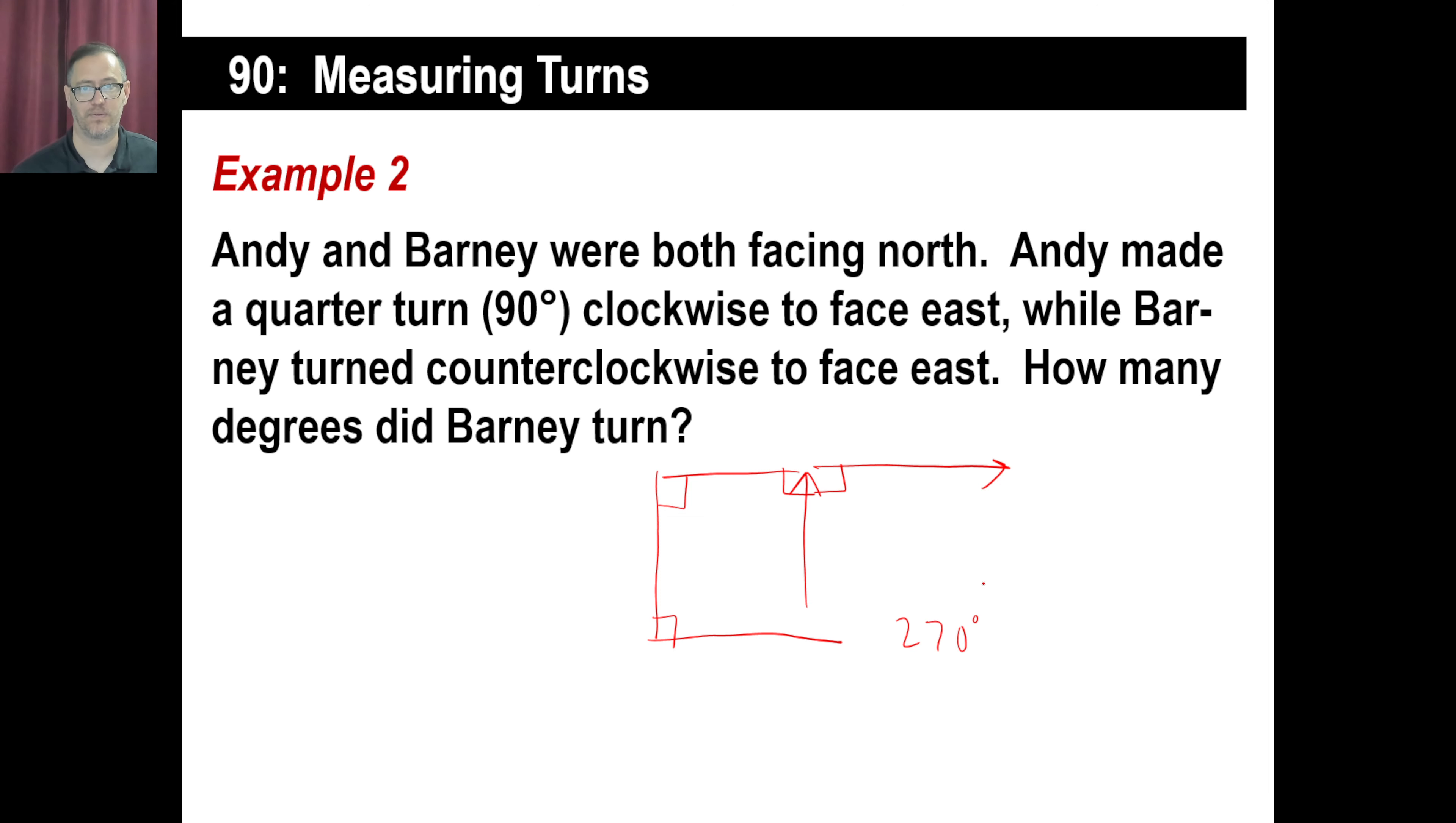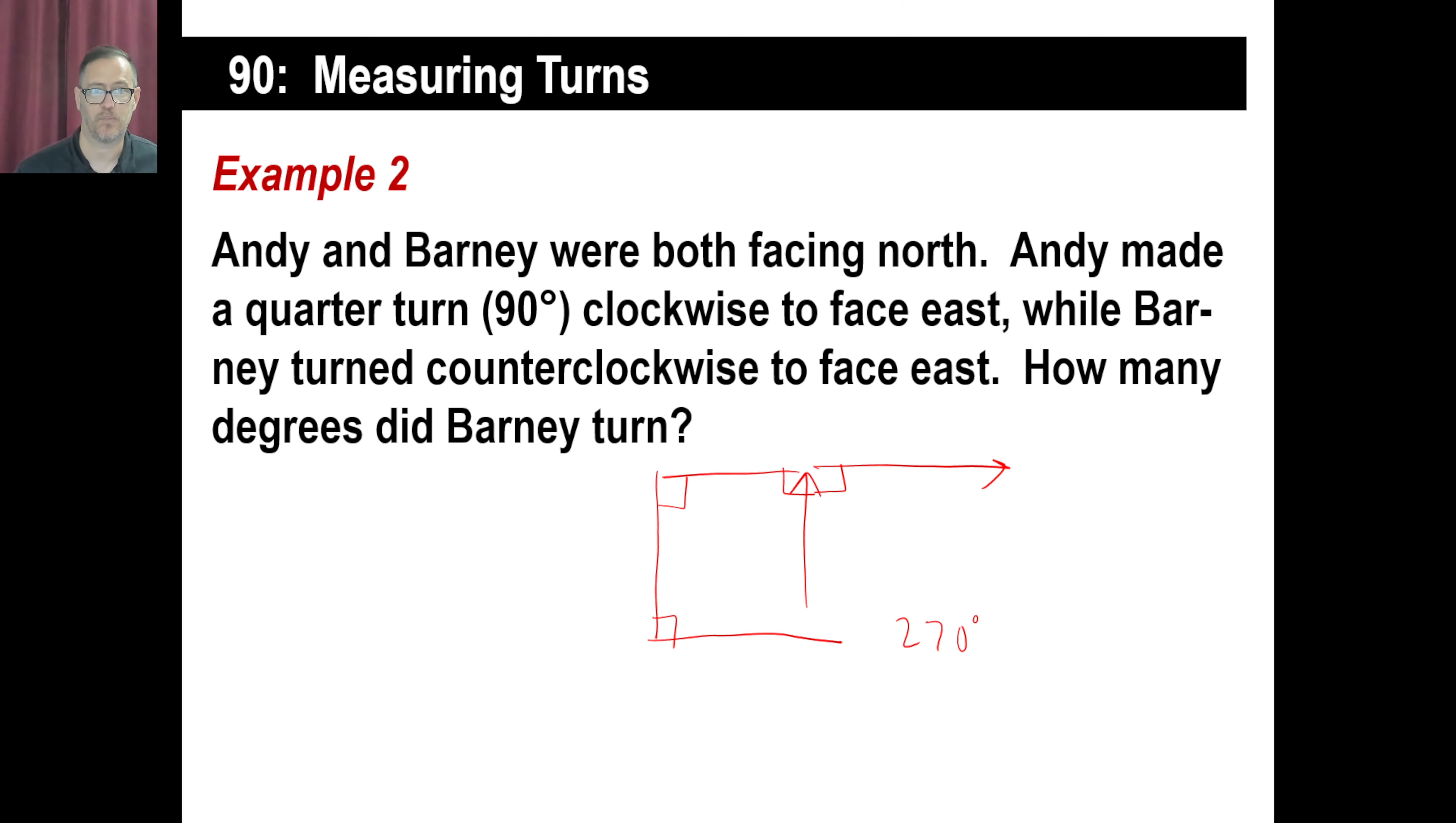That's the way he turned. I'm not sure what he was doing. Looking for Thelma Lee probably. Here's another one. As Elizabeth ran each lap around the park, she made six turns to the left and no turns to the right. What was the average number of degrees each turn? In other words, she's going, let's say it's like this.